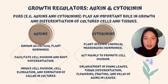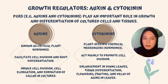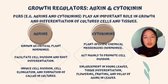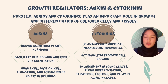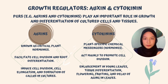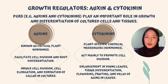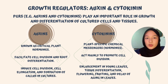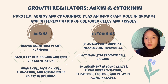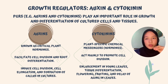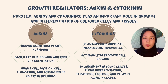As for cytokinin, it is a plant-specific chemical messenger, also known as a hormone. It acts mainly to promote cell division, enlargement in young leaves, tissue differentiation, flowering, fruiting, and delay of ageing in leaves. When several living cells are isolated from a living plant and cultured in a medium containing both cytokinin and auxin, cell division proceeds, forming a mass of undifferentiated cells that produce both shoot and root, ultimately developing into an entire new plant. The auxin favours shoot and root formation, while cytokinin favours the growth of shoots.